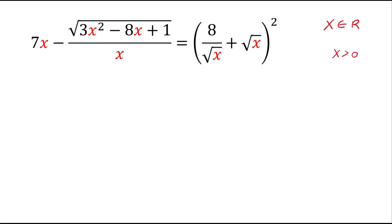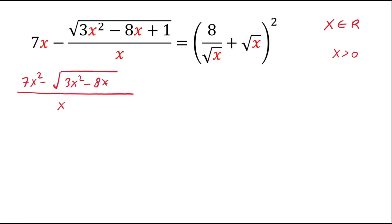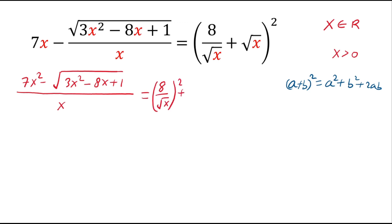In the left hand side the common denominator is x, and in the numerator we have 7x squared minus square root of 3 times x squared minus 8x plus 1. On the right hand side we will apply the (a plus b) whole square identity: a plus b whole square equals a squared plus b squared plus 2ab. Applying this identity: 8 over square root of x, whole square, plus square root of x squared, plus 2 times 8 over square root of x multiplied by square root of x.